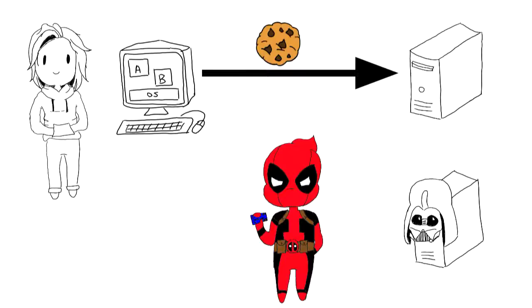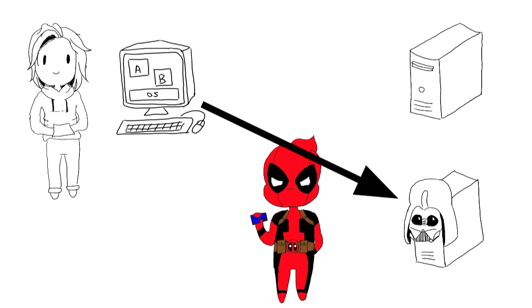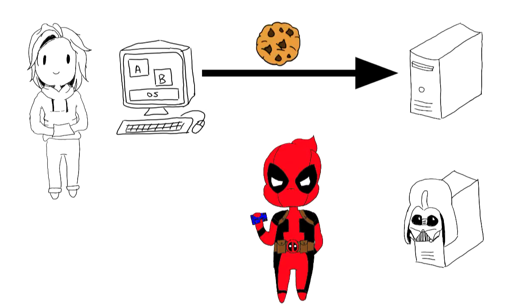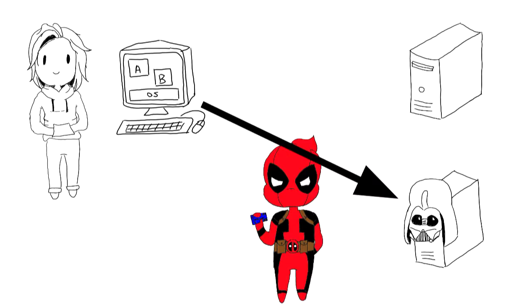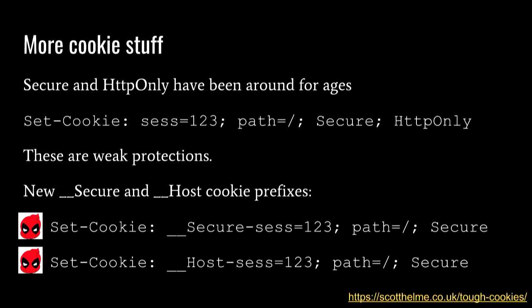So with same-site cookies on, when the bad guy redirects you, your cookie doesn't get sent. There are also two other cookie flags you probably use: Secure — only send cookies over encrypted connections — and HTTP-only — don't let JavaScript access them. And there are two new things called cookie prefixes, which strengthen the guarantees so that your cookie can only be sent to your host, not subdomains. Turn those on as well.